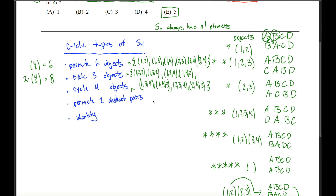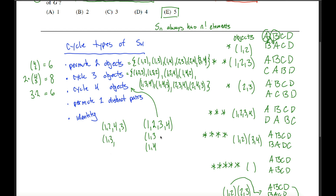For four-cycles: we ask where the first object goes — three choices. Then where that second element goes — two choices. So 3×2=6 four-cycles. Starting with (1 2), the two goes to 3 or 4, giving (1 2 3 4) or (1 2 4 3). Similarly for starting with (1 3) and (1 4), giving six four-cycles total in S4.